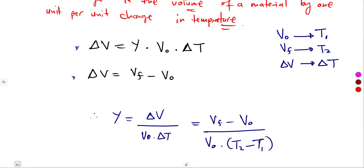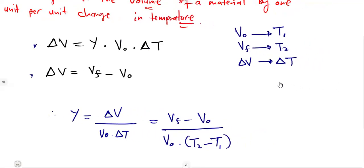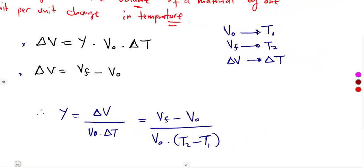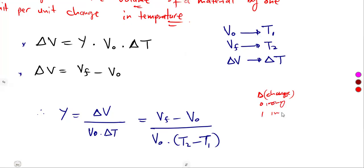All of this has not changed from what we had before. Whenever there is the delta symbol, it's the change. Whenever we have the subscript O, that is the original. Subscript 1 means initial, which goes with original. Subscript 2 is the final. So nothing has changed here from what we had before.